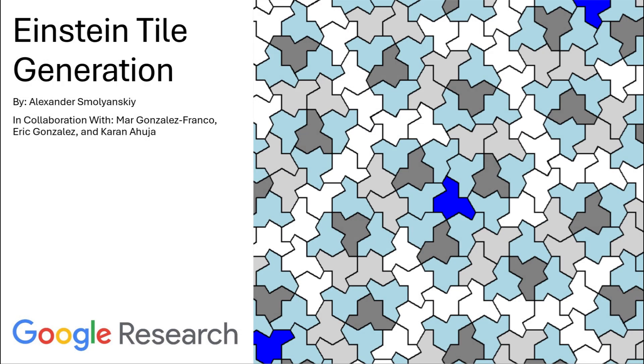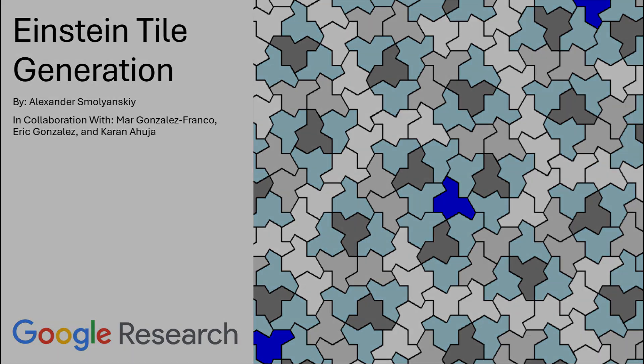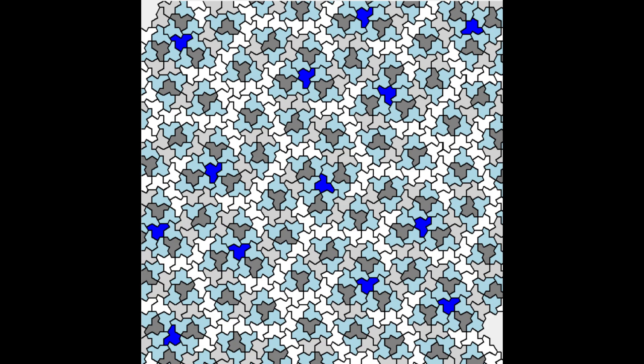Hello, my name is Alexander, and this is my project on Einstein tile generation. I made this project during my internship at Google Research. The original goal of this project was to make a new type of QR code using this Einstein tile pattern. So I made a program that's able to generate the Einstein tile pattern.